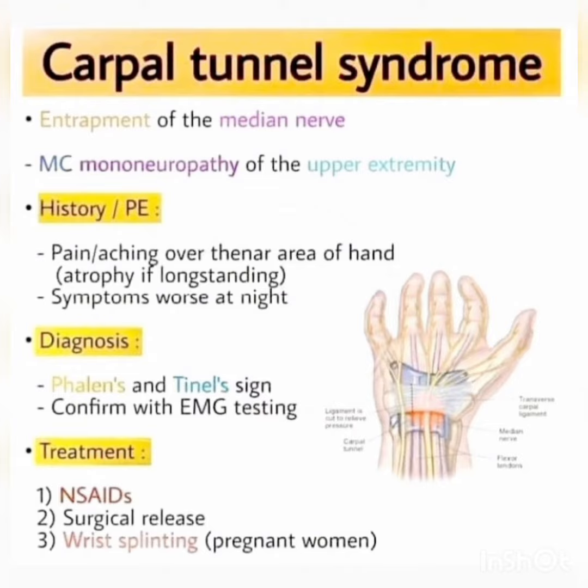Treatment of carpal tunnel syndrome includes NSAIDs, surgical release, and wrist splinting — particularly in pregnant women. To summarize: carpal tunnel syndrome is entrapment of the median nerve, the most common mononeuropathy of the upper extremity.